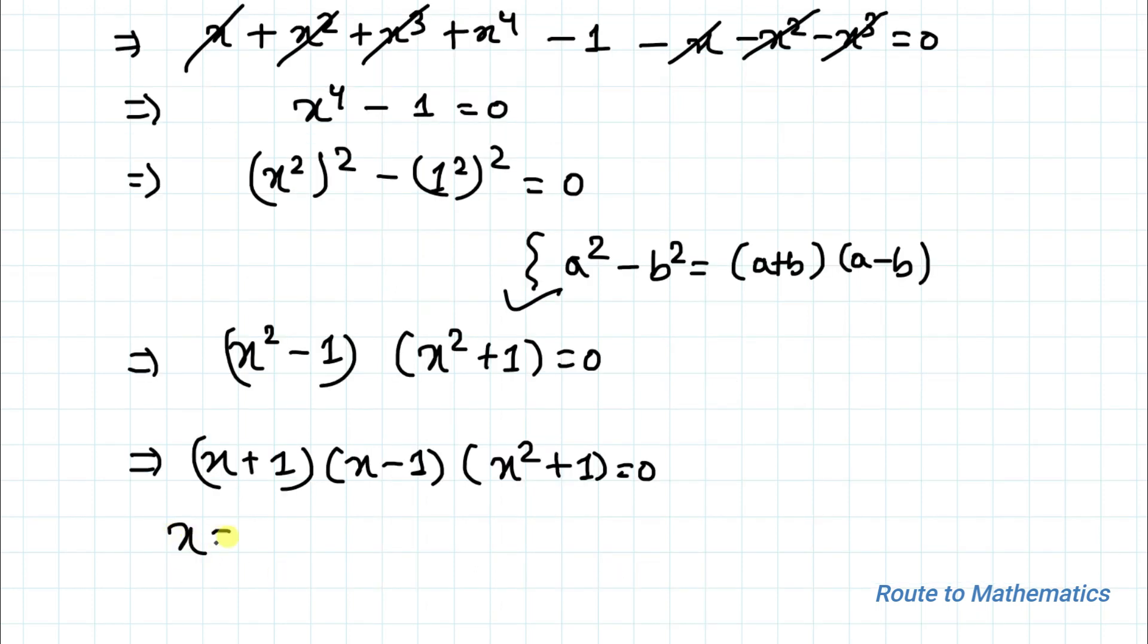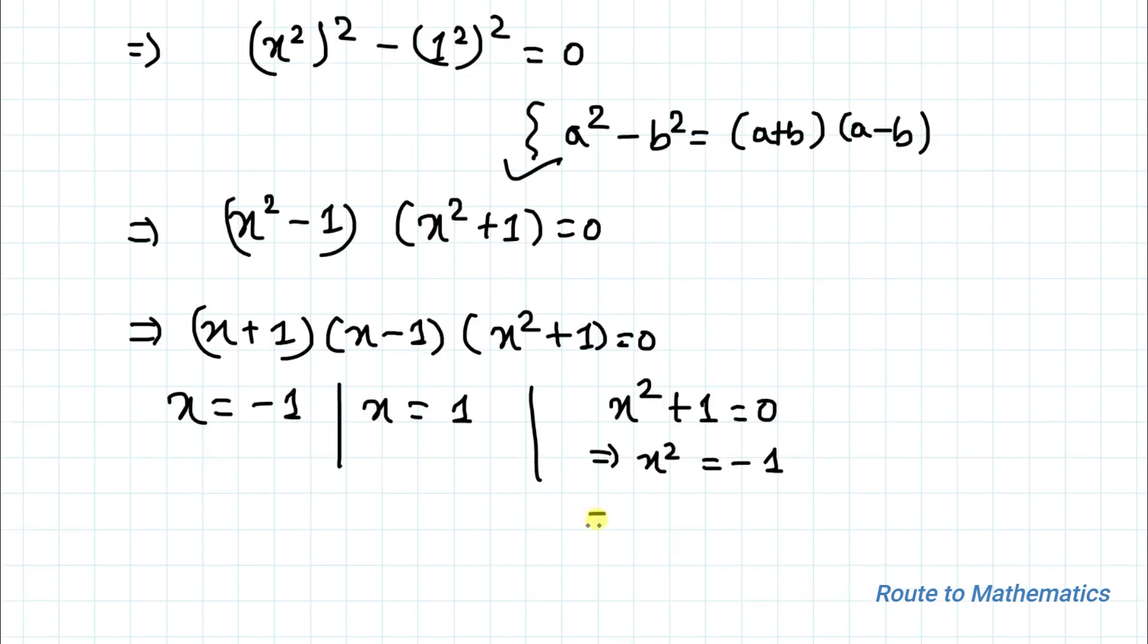From here we can write x = -1, x = 1, and x² + 1 = 0. This implies x² = -1, which implies x = ±√(-1). This implies x = i and -i.